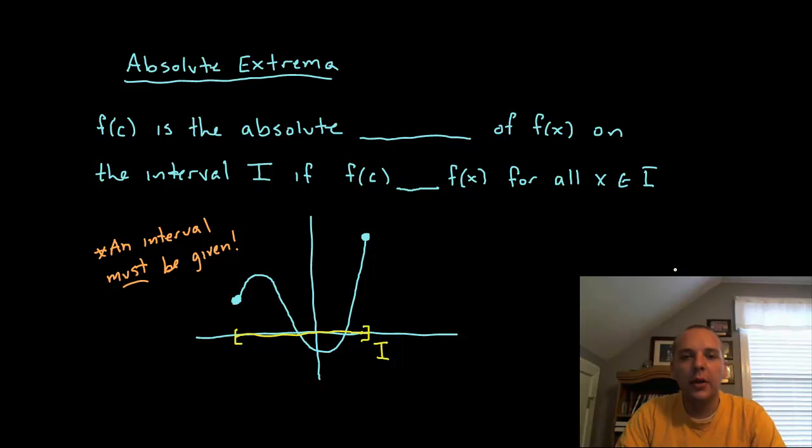So here's a quick little definition. We would say that f of c, that's a y value, is the absolute maximum of f of x on the interval I, from a to b, if your y value f of c is greater than or equal to f of x for all of the other x's in the interval. So when we look at this picture here, here's an example.